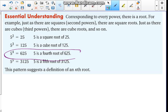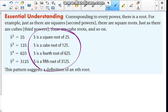For a fourth, 5 to the fourth power equals 625, then we can say 5 is a fourth root of 625, and so on. A pattern develops, and we can write a formula for this. This pattern is suggesting a definition for the nth root.